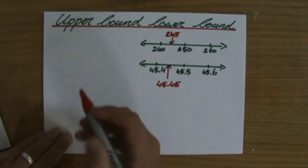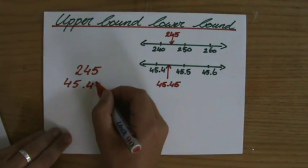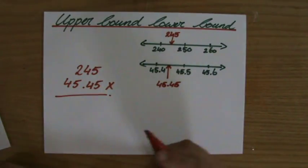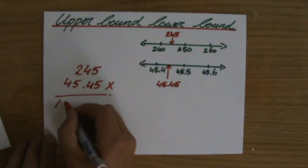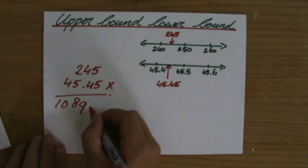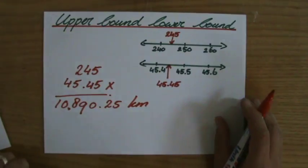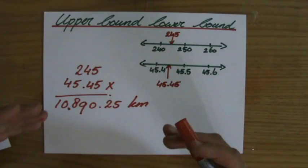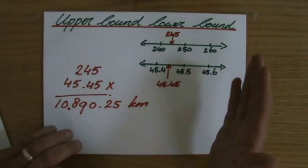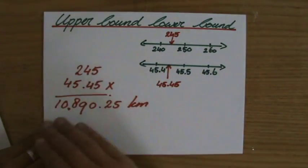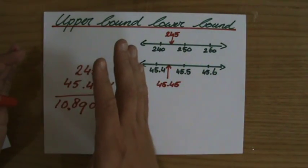So how do I find the total distance? It's 245 multiplied by 45.45. If I do that on my calculator — though you should be able to do it without one — it is 10,890.25. So 10,890 and a quarter kilometers. I want to emphasize again: you first take the lower bound values and then do your workings. Instead of doing 250 times 45.5 and then taking the lower bound of that answer — that's wrong.